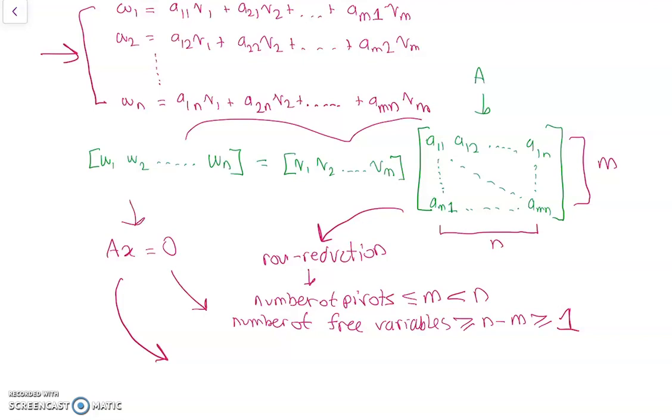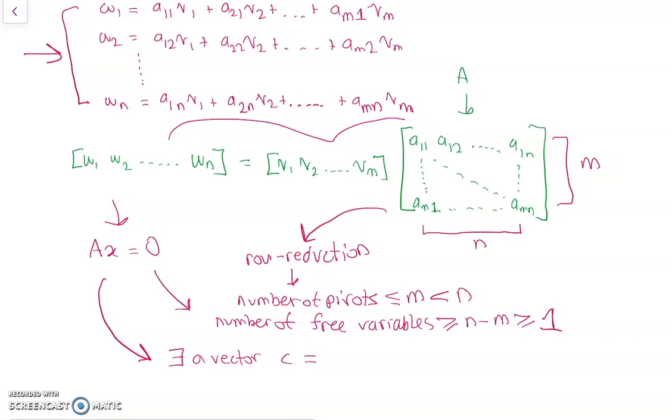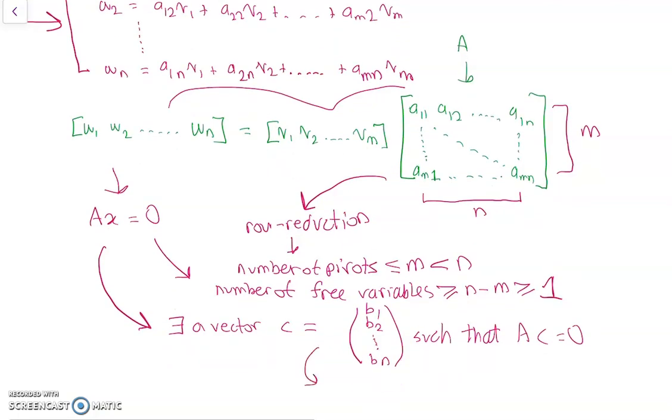So we can assume there exists a vector C, and let's say this vector C is equal to B1, B2, up to Bn, such that AC is equal to 0, and this also satisfies C not equal to 0.